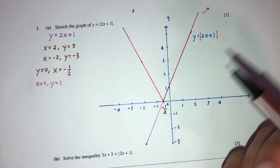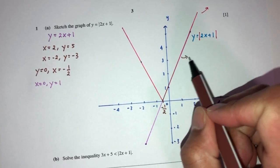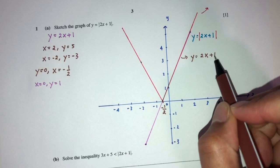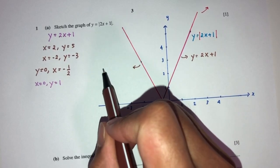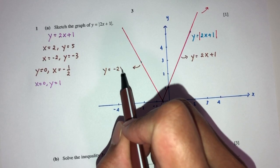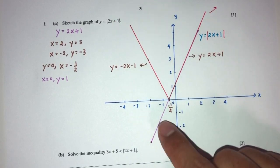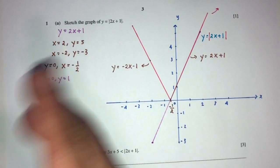Label this as your graph. The red one will be y equals modulus of 2x plus 1. Now, obviously, we should know this line's equation is y equals 2x plus 1, and the equation of the reflected line is y equals minus 2x minus 1. But for now, only the red line — label this as your graph for part A.